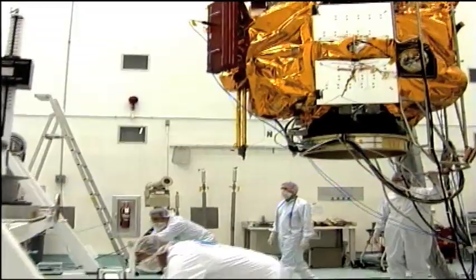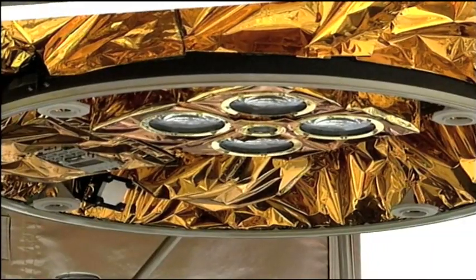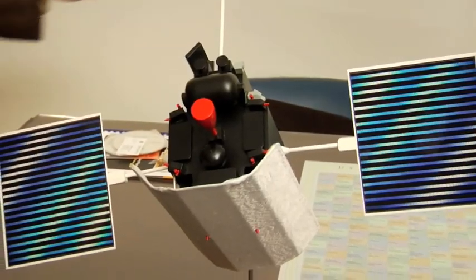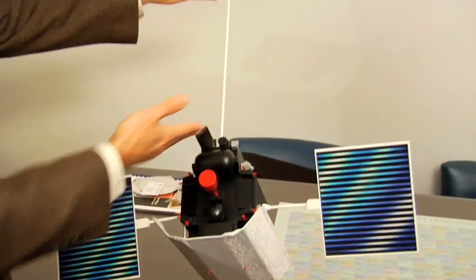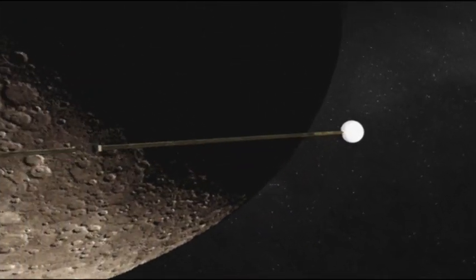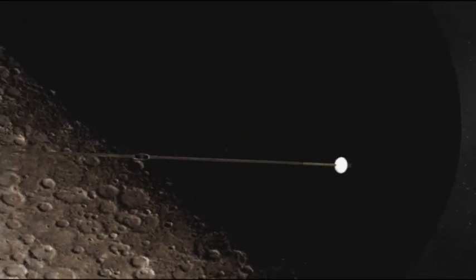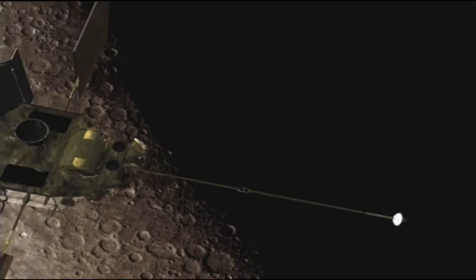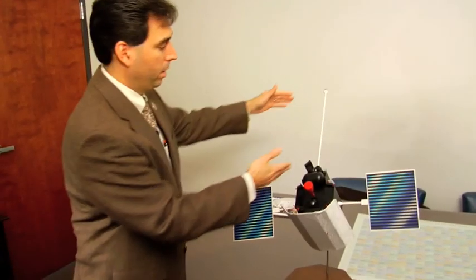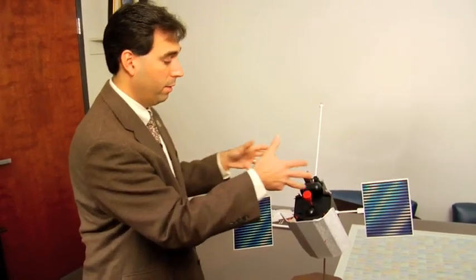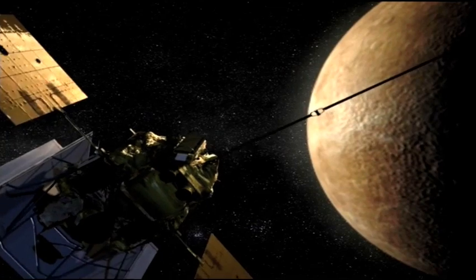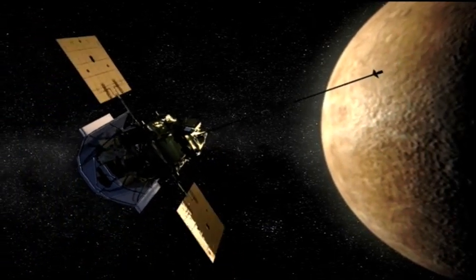In addition to all the thermal protection, MESSENGER is also loaded with tools for gathering scientific data. At the end of this, what we call the magnetometer boom is a magnetometer. This instrument helps scientists learn about Mercury's magnetic field in detail, providing information about the field's strength and how it varies with position and altitude. We have to set it this far off from the spacecraft because the spacecraft itself generates a magnetic field, and we want to separate the magnetic field of the spacecraft from the magnetic field that the sensor might be sensing.